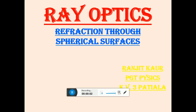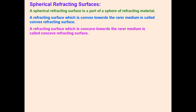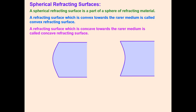Hello students, today we will discuss refraction through spherical surfaces. A spherical refracting surface is a part of the sphere of refracting material — the interface separating two media has a spherical shape. A refracting surface convex towards the rarer medium is called a convex refracting surface, and one concave towards the rarer medium is called a concave refracting surface. From the rarer side, you see the surface as convex or concave accordingly.